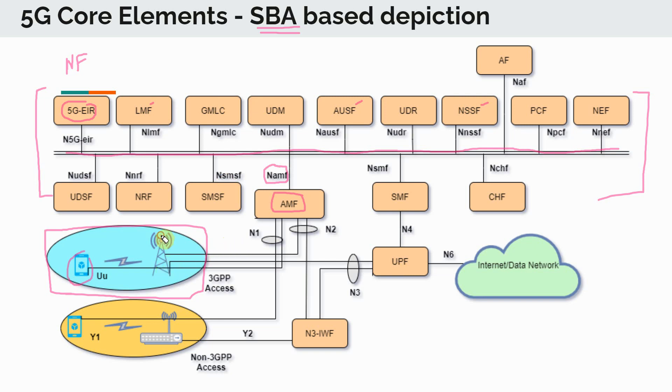You have the NR or the NGRAN. This is connected to the AMF, which is sort of like the MME we had in 4G. And over there we had the S1 connection between the 4G LTE and the MME. Here we refer to this as N2. So N2 is the interface name. And then N1 is the interface between the AMF and the UE.